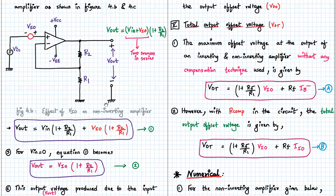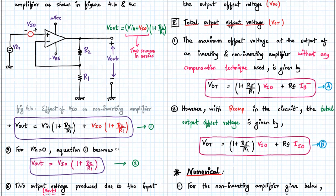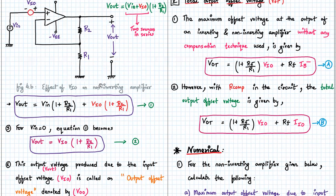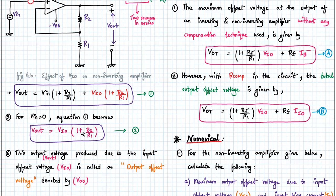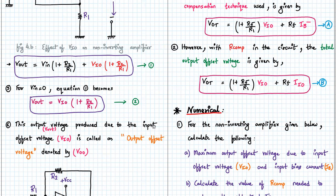We have incorporated the input offset voltage VIO in the non-inverting terminal, and these two voltages add in series. So Vout will be Vin plus 1 plus Rf upon R1. The effect of VIO on the non-inverting amplifier is that addition of an extra term, that is VIO into 1 plus R2 upon R1. With Vin equal to 0, equation 2 becomes Vout equal to VIO into 1 plus R2 upon R1.